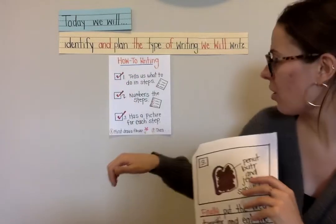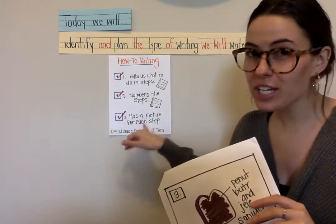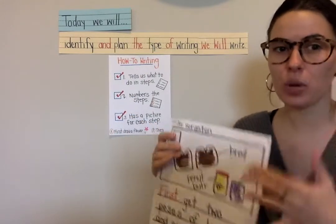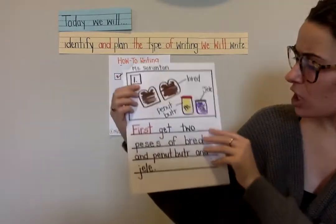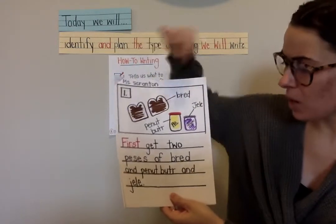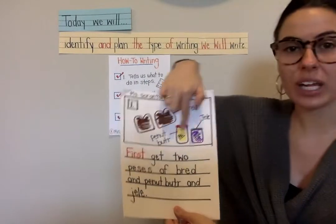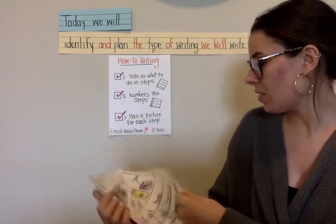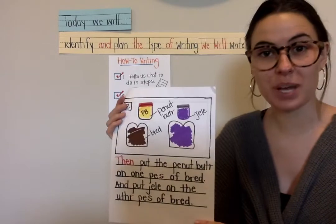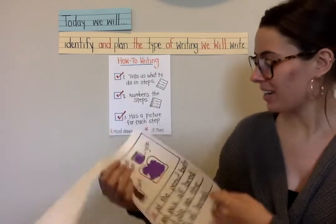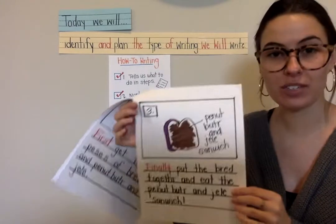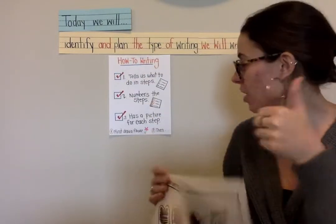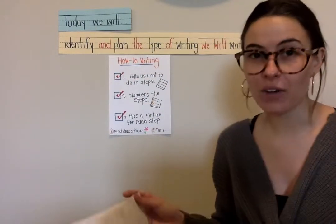Very good job. Now, do I have a picture for each one of my steps? We learned before that our pictures have to make sense with the writing. I was talking about getting two pieces of bread and my peanut butter and jelly — and I even have labels to help me. Does this step have a picture? Thumbs up, thumbs down. Great. And what about our last and final step — does it have a picture? Wonderful, awesome job. So now, writers, it's your turn to try.